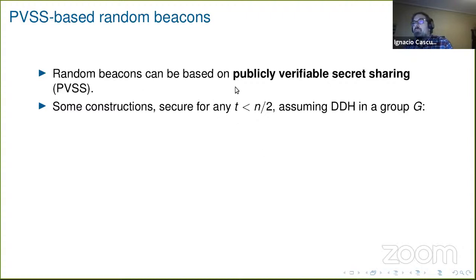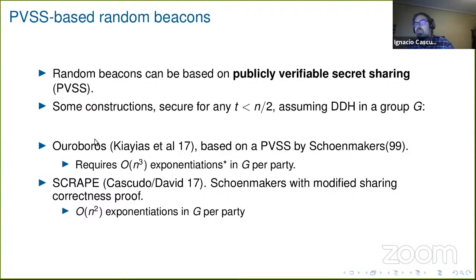The constructions that existed, they assume DDH in some certain group, and they are secured for any dishonest minority. For example, Uroboros used the PVSS by Schumacher's from 99. And what we want to concentrate here is on the computational complexity. This beacon requires n cubed exponentiations per party. So if n is the number of parties, the thing is over a group. Then in another construction, we modified a little bit the correctness proof for the sharing and we got N squared exponentiations per party.